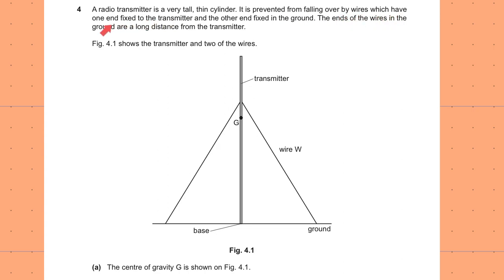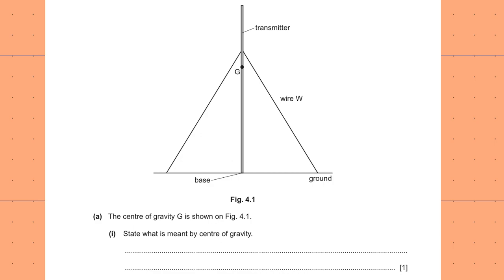A radio transmitter is a very tall thin cylinder, prevented from falling over by wires fixed to the transmitter at one end and the ground at the other. Figure 4.1 shows the transmitter and two of the wires. The centre of gravity is shown. State what is meant by centre of gravity.